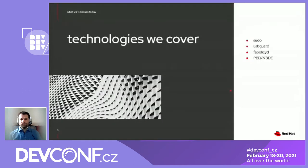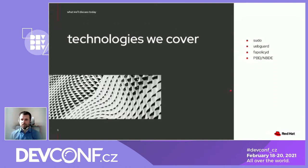The technologies I'm going to talk about today are SUDO, USBGuard, FAPOLICYD, PBD, and NBD. These cover those categories I mentioned before — the technologies covering those specific authorization areas.